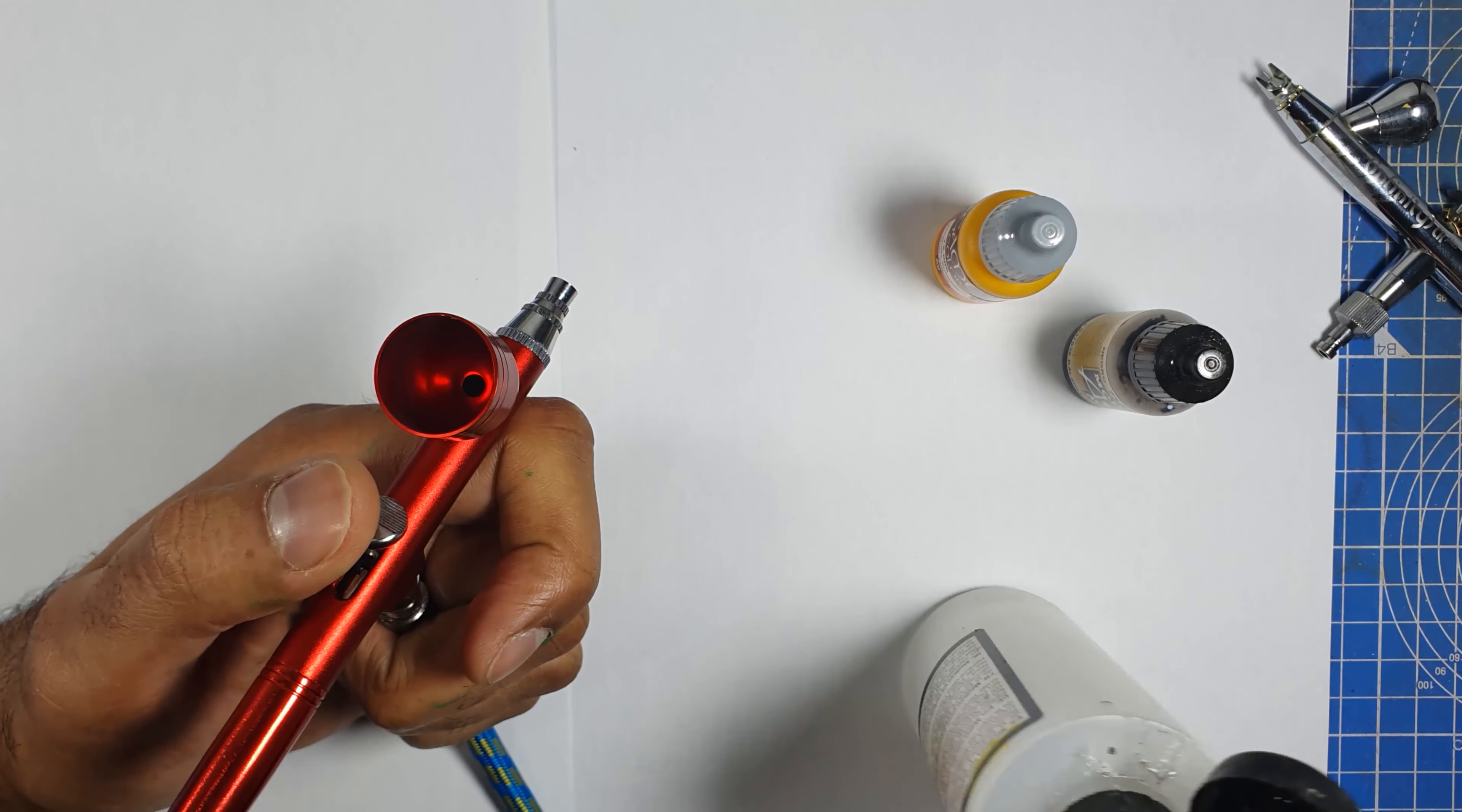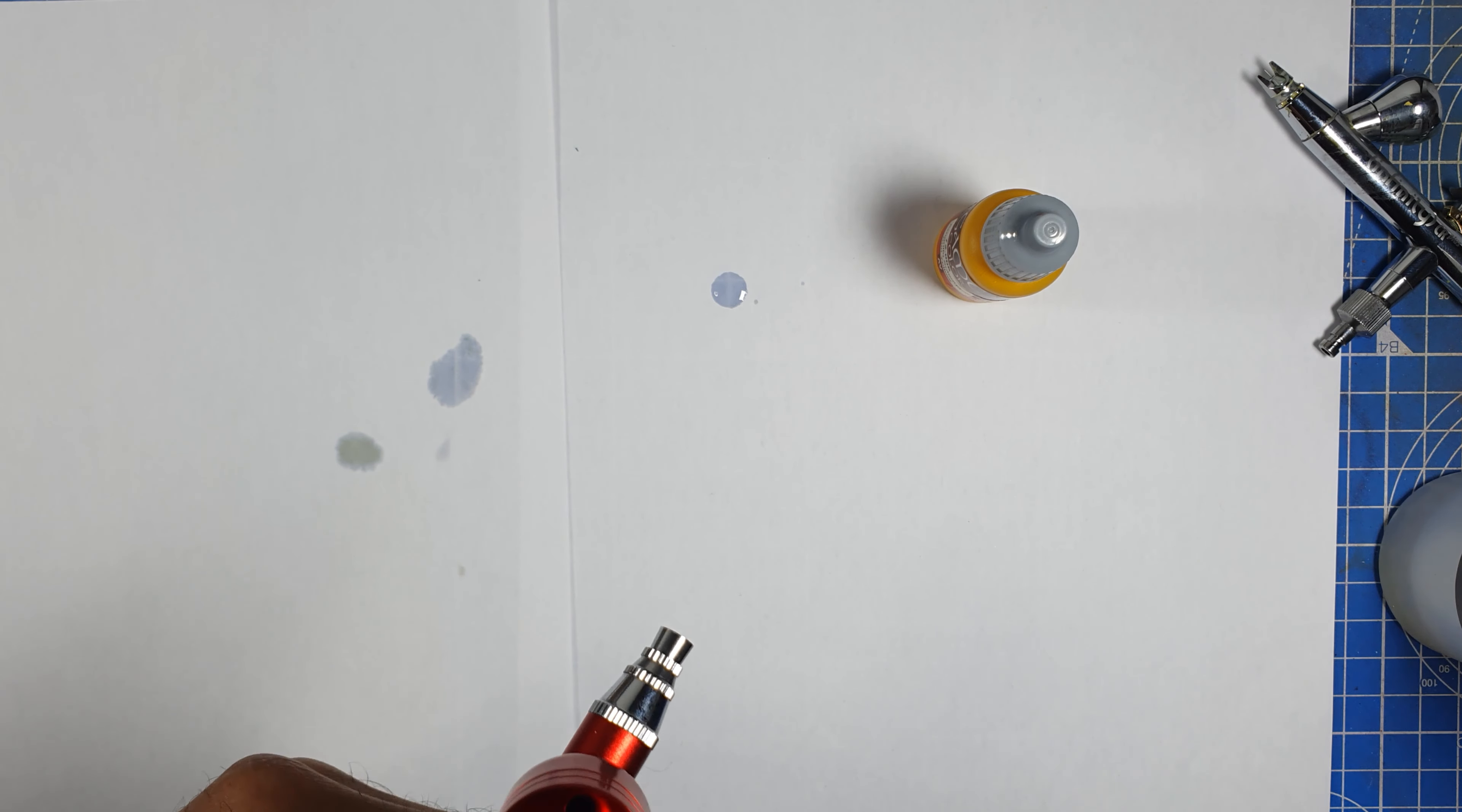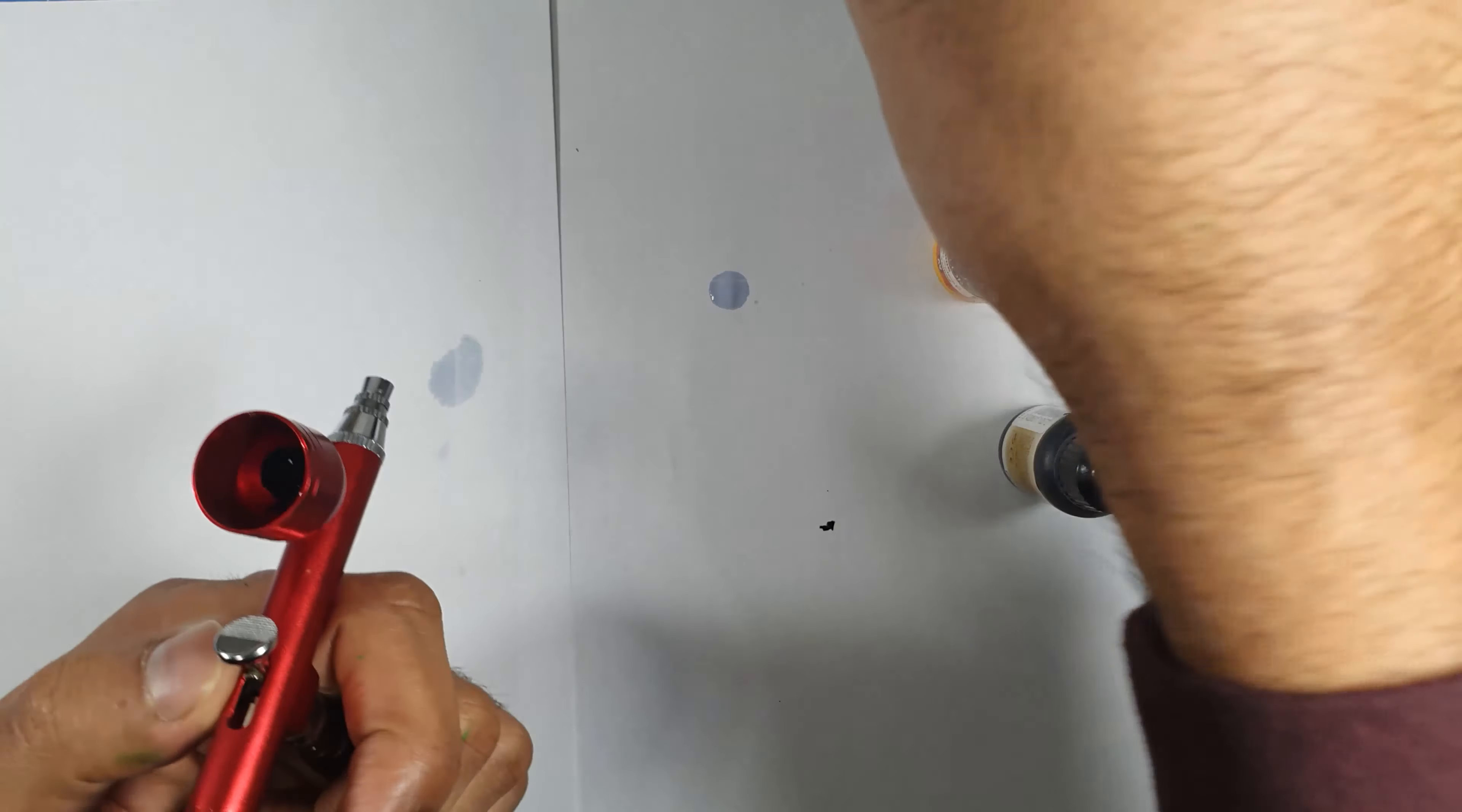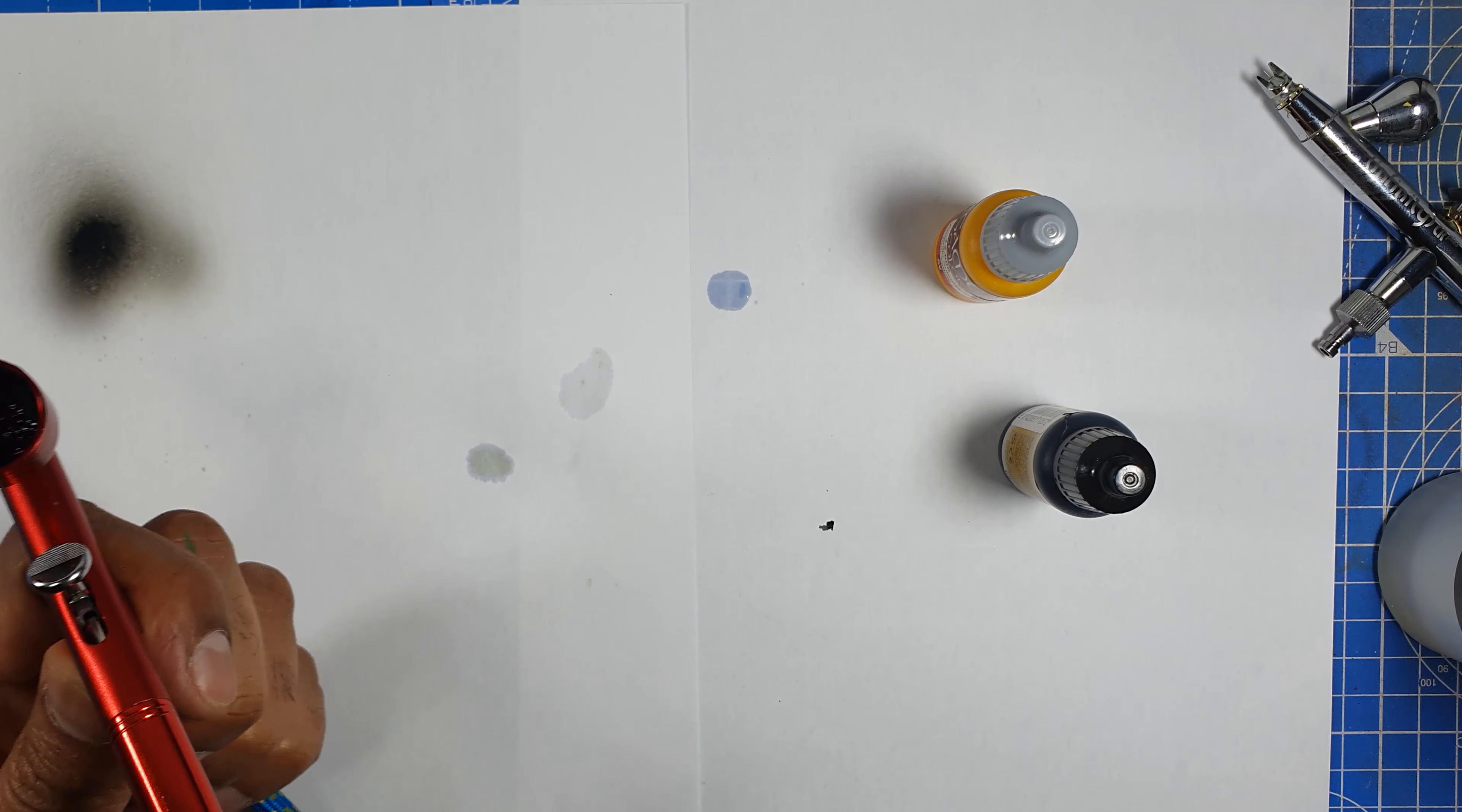All right guys, I just hooked it all up. I'll just put the compressor on. I'm going to put a little bit of airflow. Airflow improver is a must, it really loosens up the flow of the paint, airbrush flows. And then I'm just going to put a few drops of this Vallejo Air black colour. Get my brush here, just mix it.